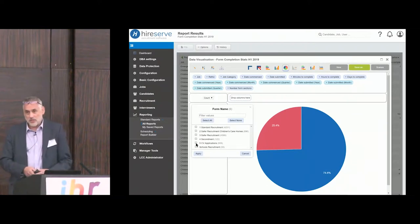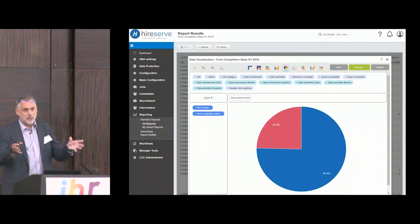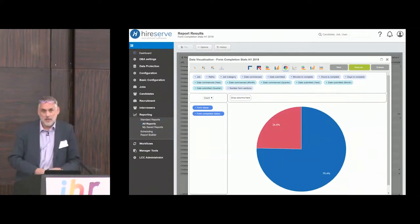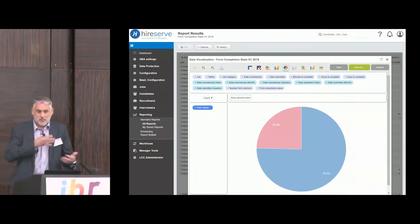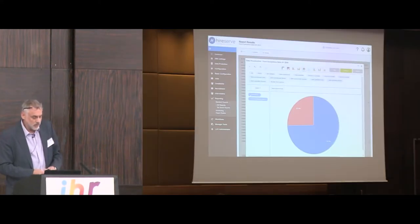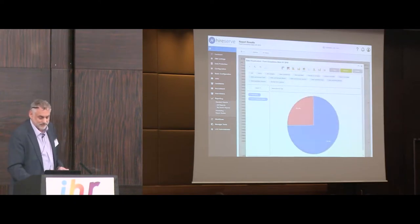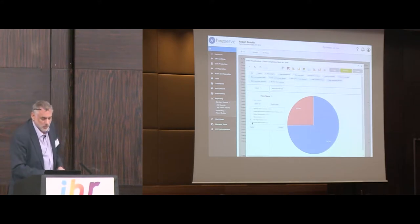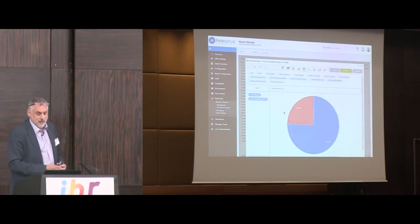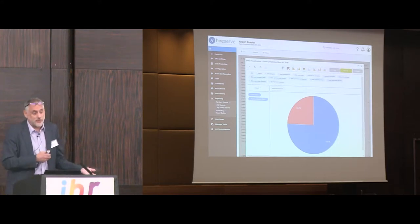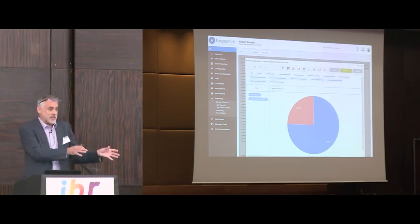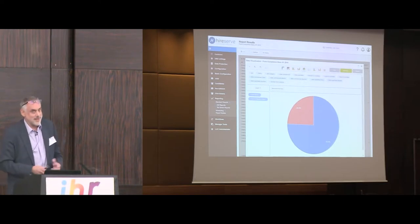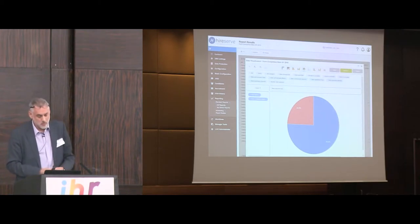You might wonder whether that changes with different application forms. They've also got a safer recruitment form and a CV application form with fewer sections — only five. But the differences aren't that major. The conclusion for this particular employer is that whether it's a five-stage or ten-stage application form doesn't seem to make a great deal of difference to the volume coming through.